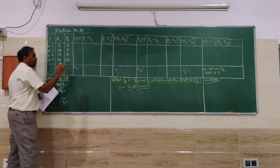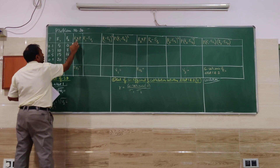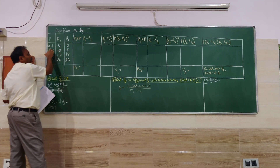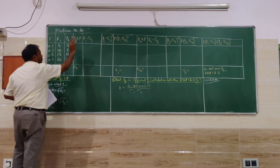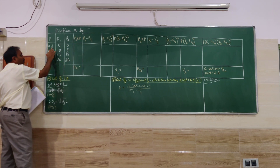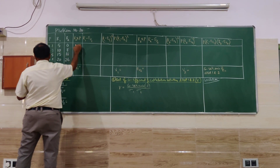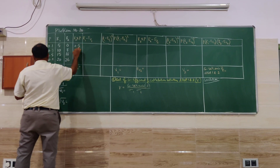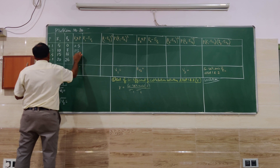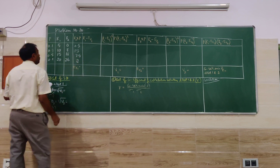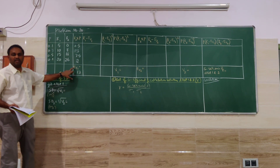The first step is finding expected return. Expected return will be calculated as R1 multiplied by P for the first asset. R1 is the return of asset 1 and probability is common between asset 1 and asset 2. So: 5×0.1, 10×0.3, 15×0.5, and the last value. We get 0.5, 3, 7.5, and 2. Adding all four values gives us 13, so the expected return on asset 1 is 13.